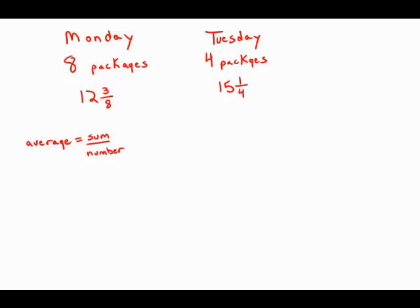So I'm going to take the average formula, average equals sum divided by number of items, and I'm going to rewrite this as follows. Average times the number of items equals the sum of the items.